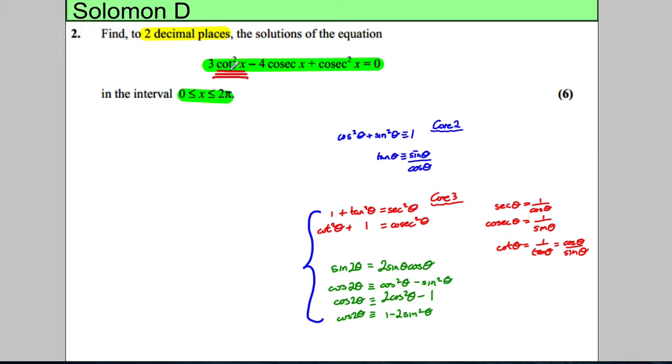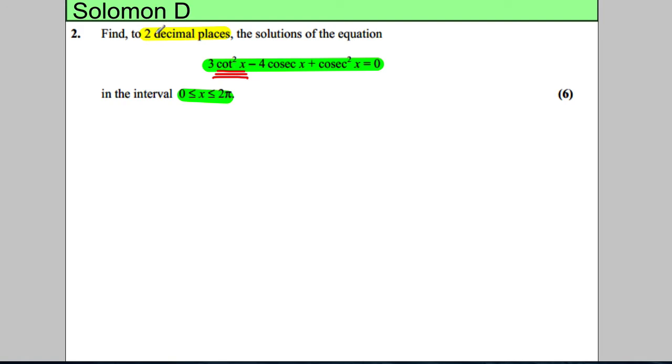What links a cot squared and a cosec? Well, cot squared add 1 is equal to cosec squared. So, that's the one I want here. I'm going to use the identity cot squared x add 1 is equal to cosec squared x.